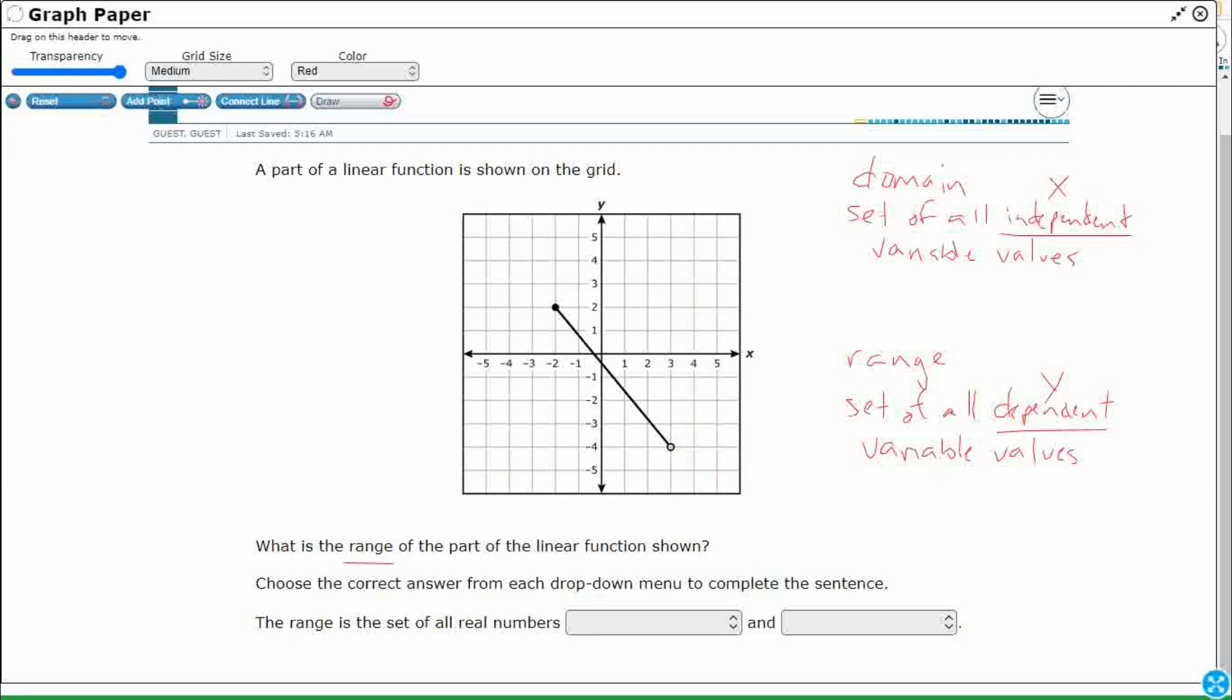But sometimes you get a problem situation in which they're using different variables. It might be an n, or it might be an f of n. You're not ever guaranteed an x and a y. So think of it as independent and dependent variable values, and you'll be good to go. Let's make sure we identify both so we can differentiate between the two on our answer choices.